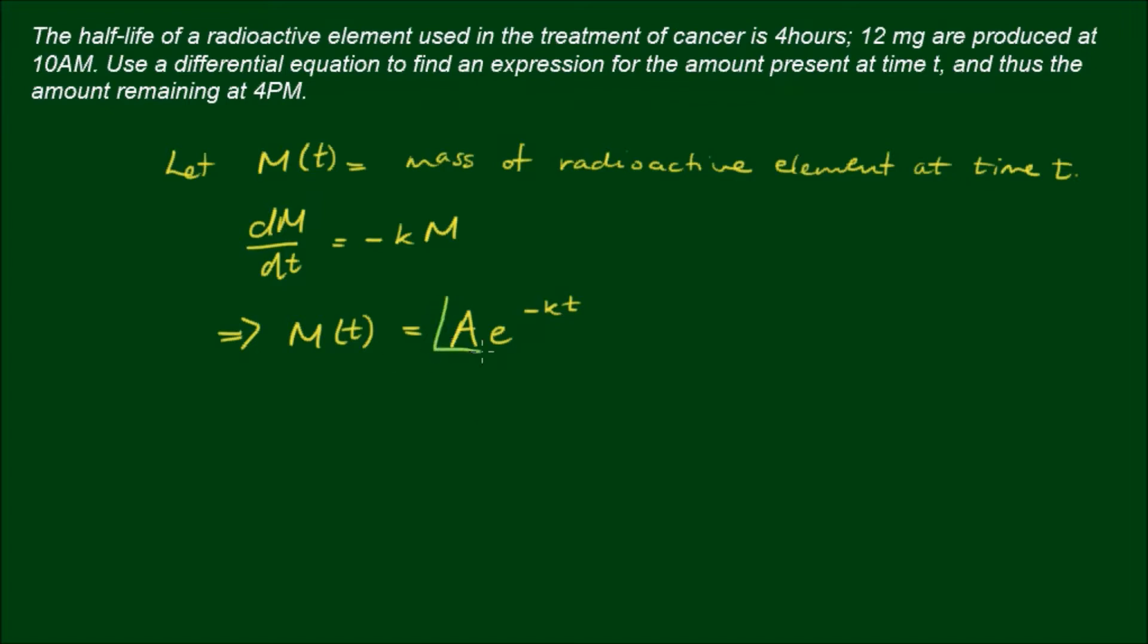Now A is always equal to the initial amount, or the amount that we start off with, which is 12 milligrams. For now I'm going to leave it in symbol form. Let's let M₀, so M initial, equal A, which will numerically equal 12 milligrams. So I'll rewrite the equation as M(t) equals M₀e^(-kt). To work out the decay constant k, we simply consider the half-life that we're given, which is 4 hours.